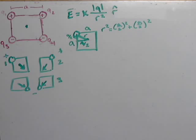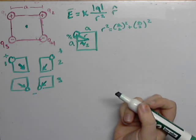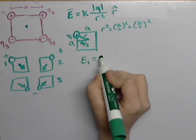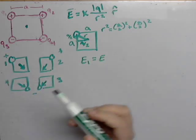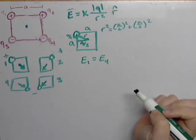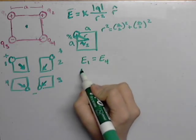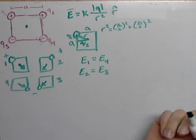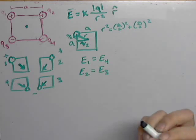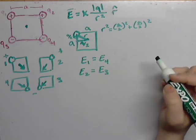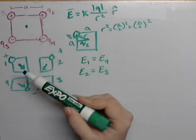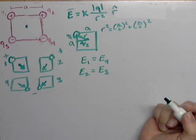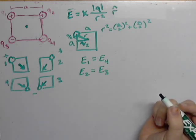Now, in terms of magnitude and direction, we can clearly see that E1 is going to be equal to E4. And also in terms of magnitude and direction, E2 is equal to E3. So if we were to add up all of these vectors so that we can find the net electric field, we're now going to have to break it up to components in order to do that.